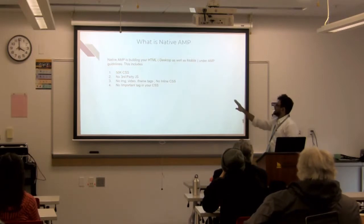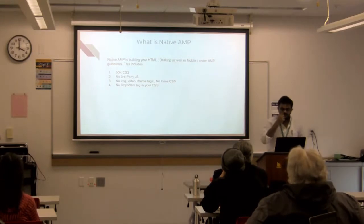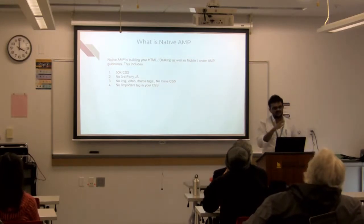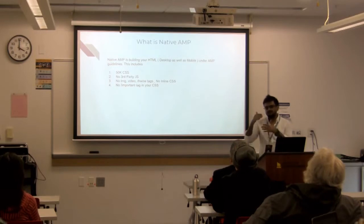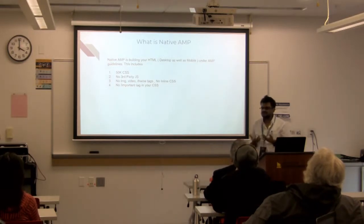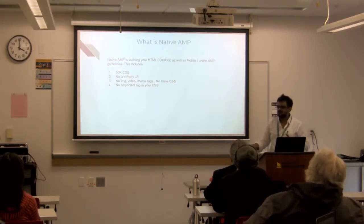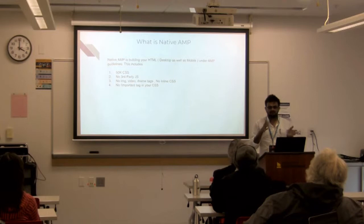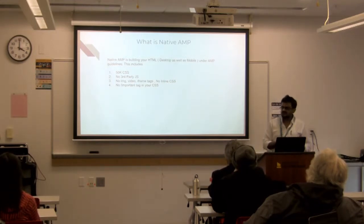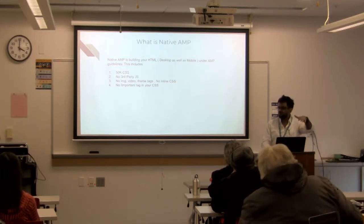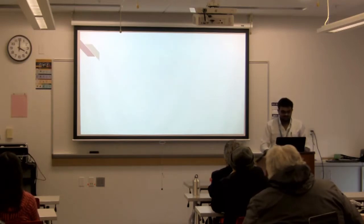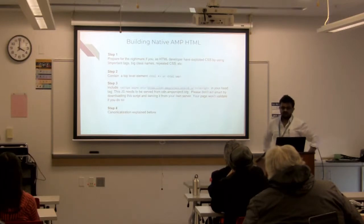The alternative to using the plugin is coding your own HTML using native AMP. If you are a good HTML developer and know CSS well, you can follow the basic rules for native AMP. The key steps are: change your HTML tag to 'html amp,' include the AMP script from cdn.ampproject.org in the head — and don't be smart and download this file to your own server, because Google caches v0.js in your browser through Chrome to avoid a round trip.